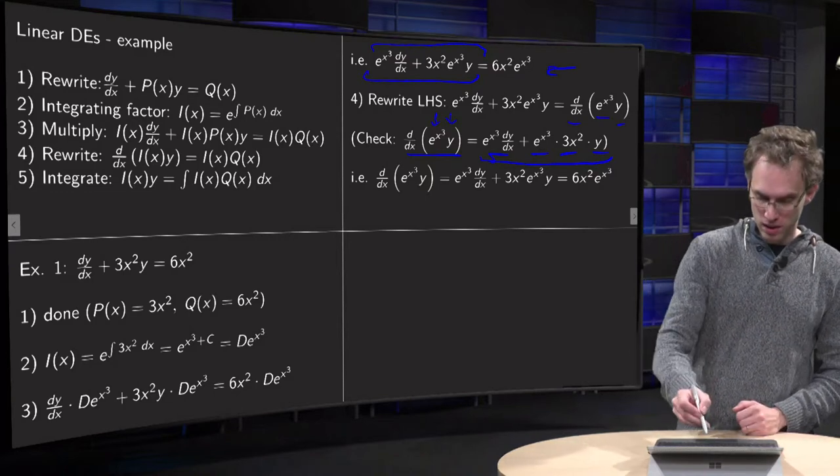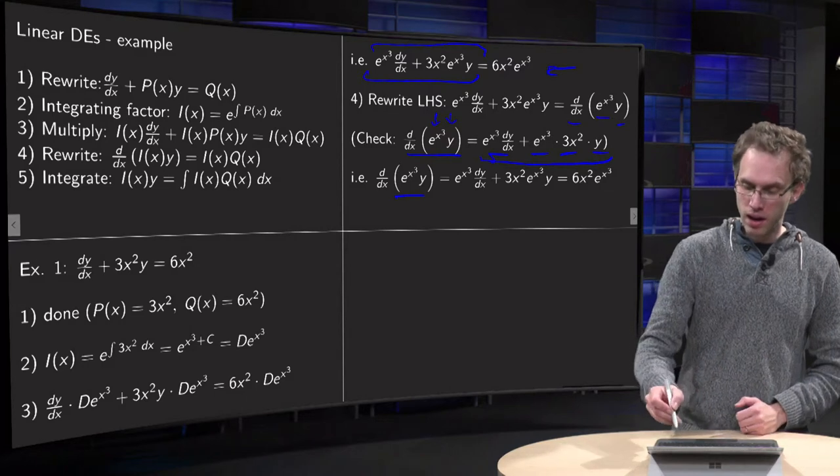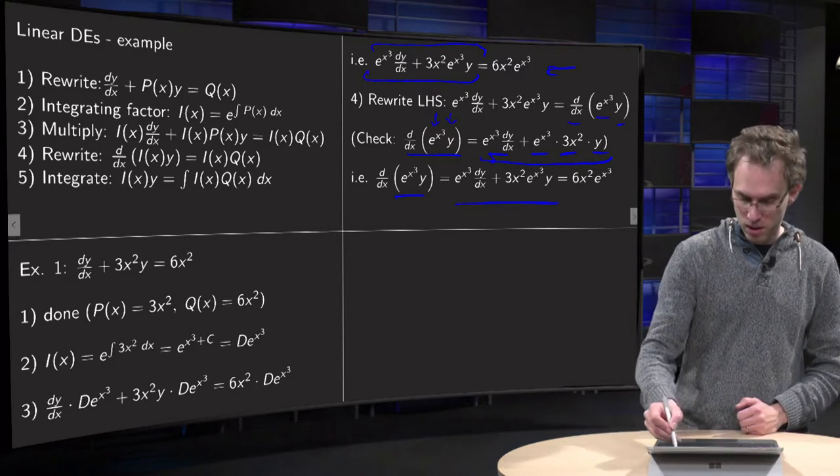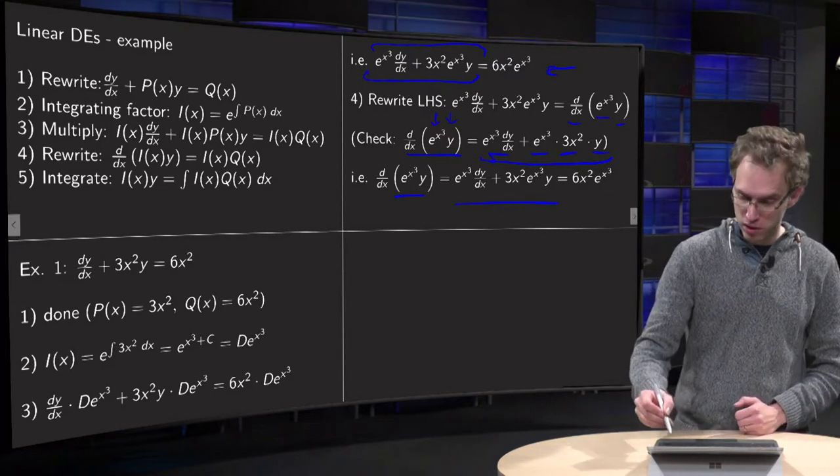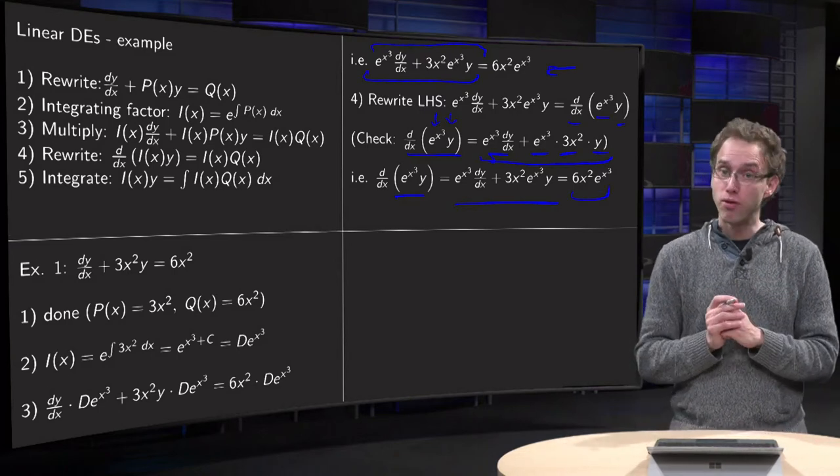So this was correct. So the d/dx of e to the power x³ times y equals the left hand side of the differential equation equals the right hand side of the differential equation. So that's the end of step 4.